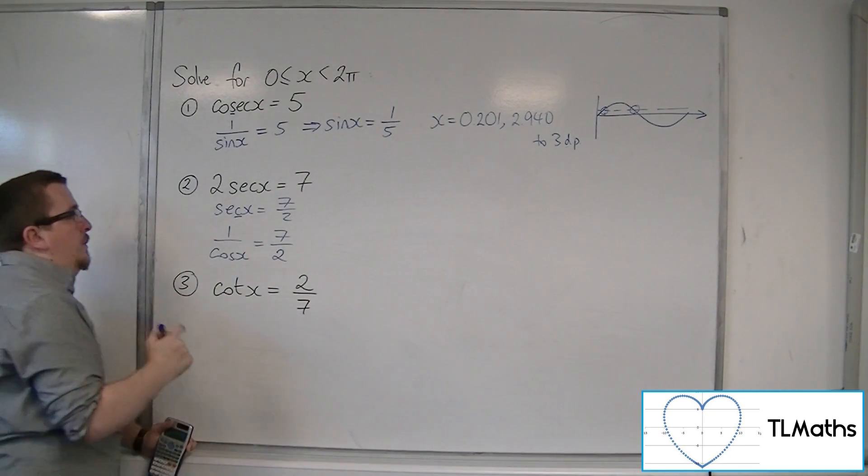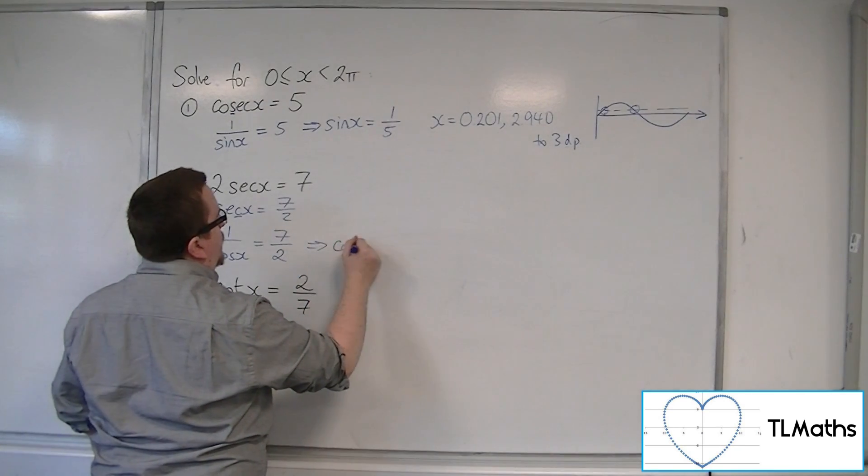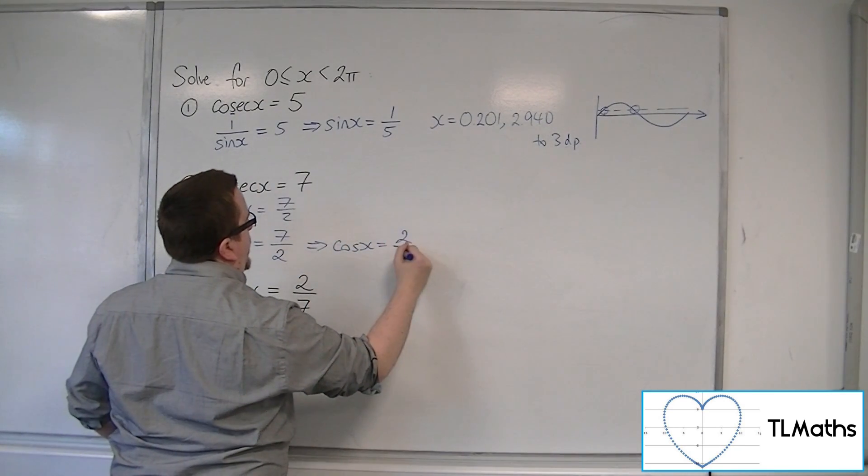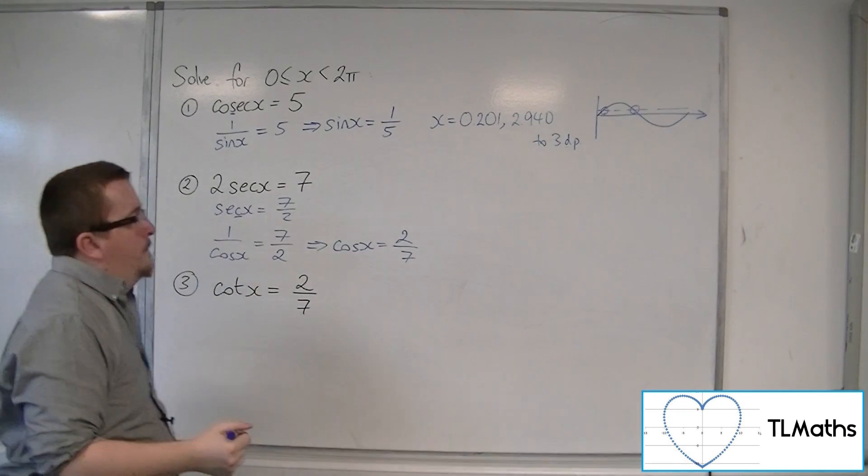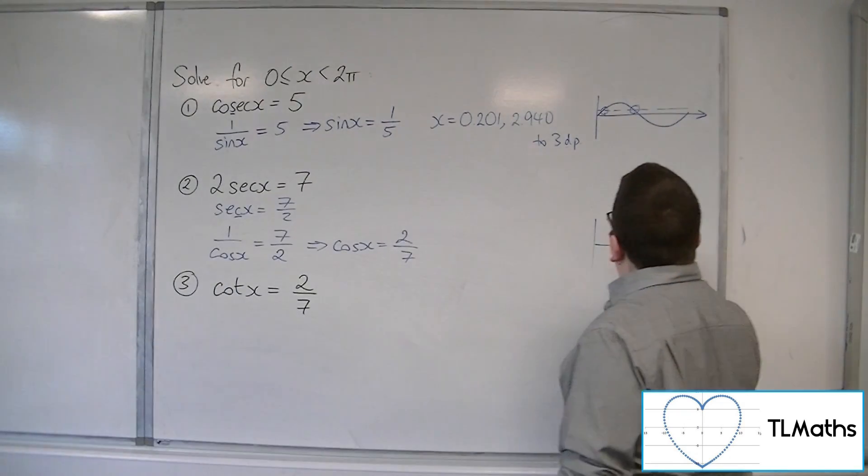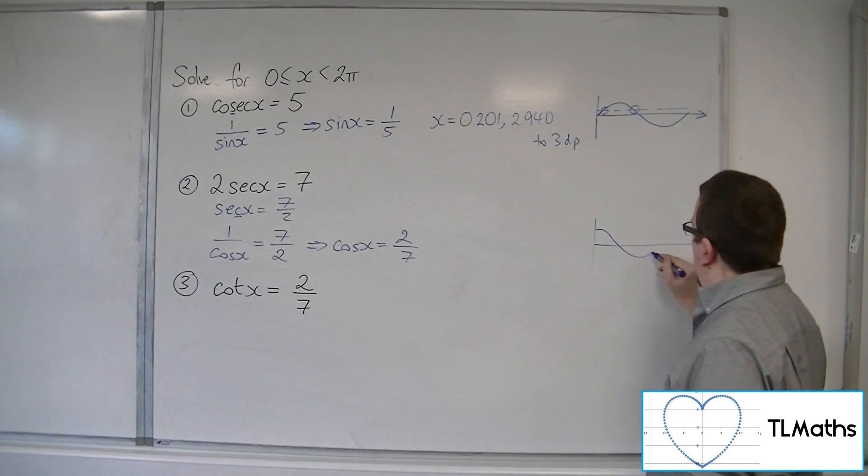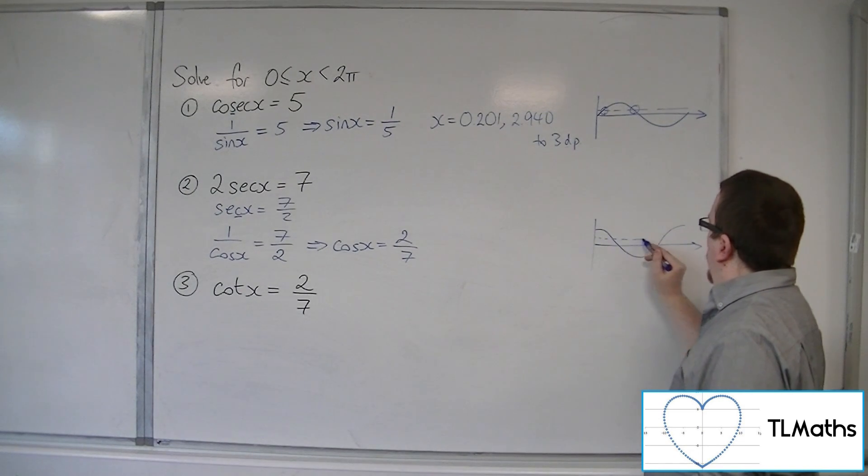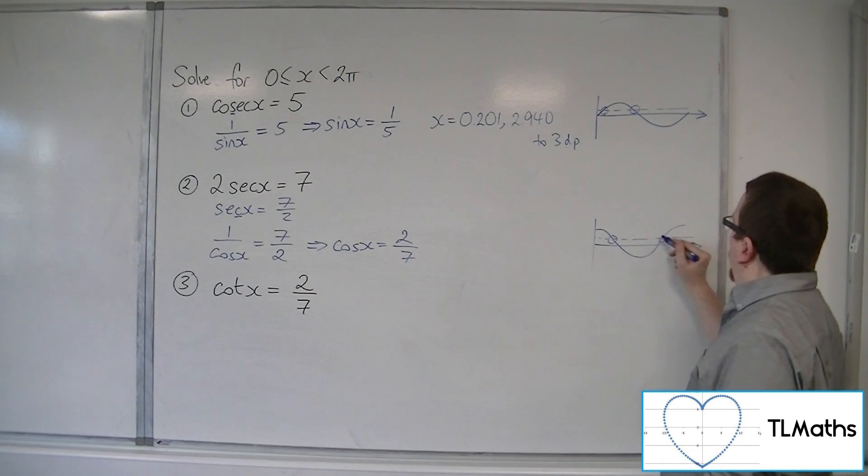And so cosine x is equal to 2 over 7 halves. So cosine, quick little sketch of cosine. 2 over 7 halves, one solution there, one solution there.